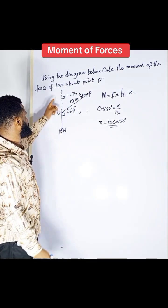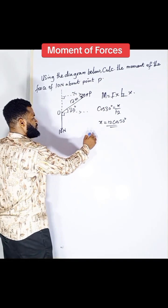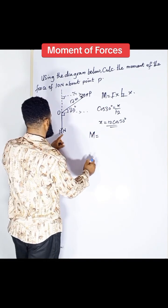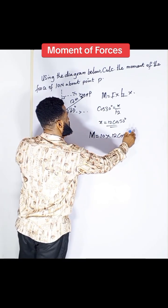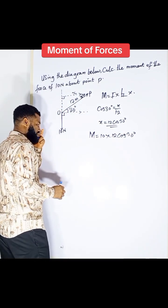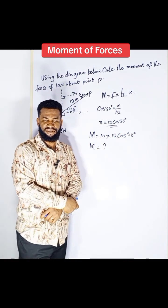Now, what is the force? The force is 10 newton. So, according to the moment, the moment is going to be equal to 10 multiplied by 12 cos 30. And whatever you have is your answer. Thank you.